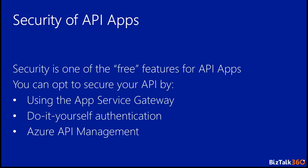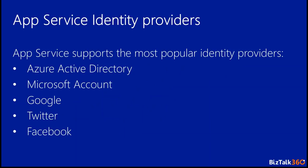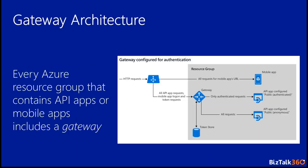Let's talk about the security of API apps. Security is one of the key features - you can opt to use multiple ways to secure your API app. You can use the App Service Gateway, as I showed, or do-it-yourself authentication like any other web application, or use Azure API Management. The free service that comes with the App Service supports the most popular identity providers including Azure Active Directory, Microsoft Accounts, Google, Twitter, and Facebook. Every Azure resource group containing API apps or mobile apps includes the gateway, provisioned automatically.